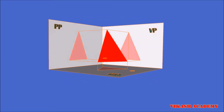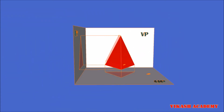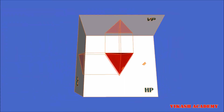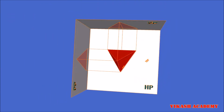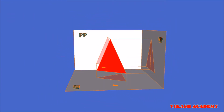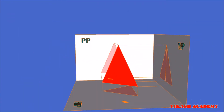This is the vertical plane on which we are going to obtain our front view, this is the horizontal plane on which we are going to obtain our top view, and this is the left profile plane on which we are going to obtain our right hand side view.